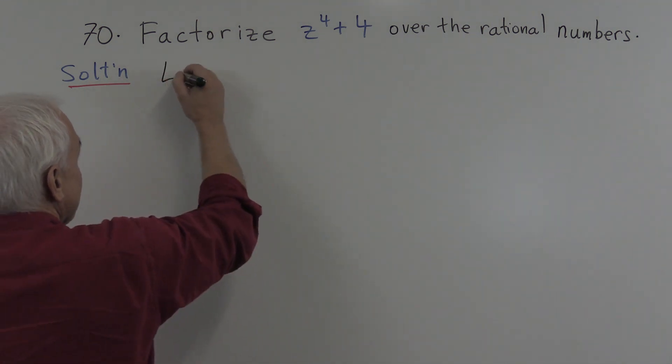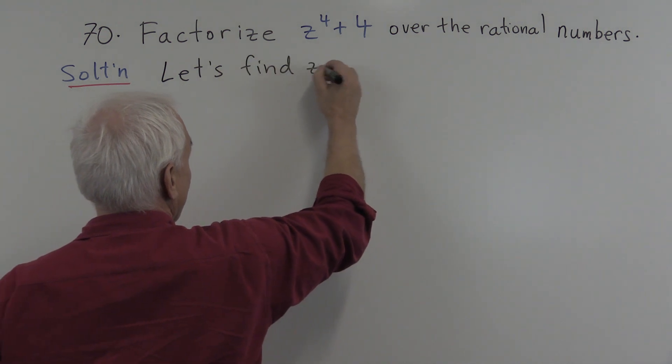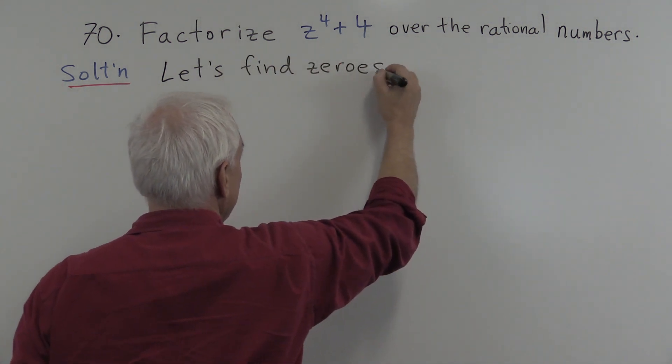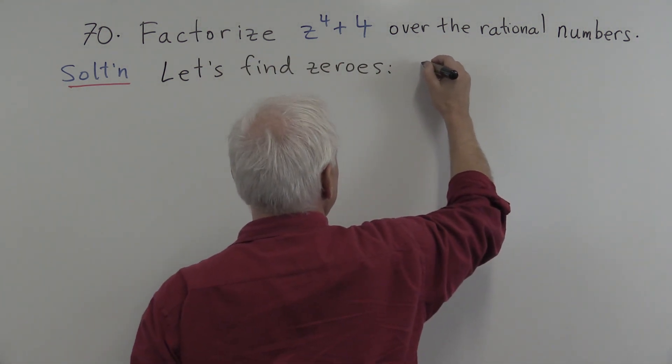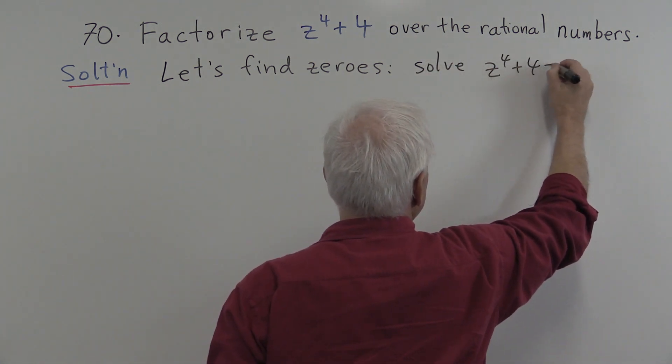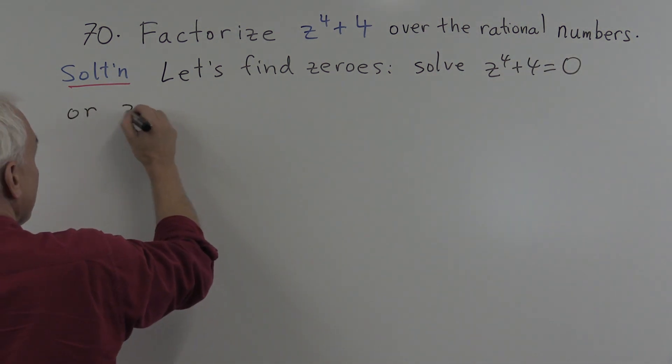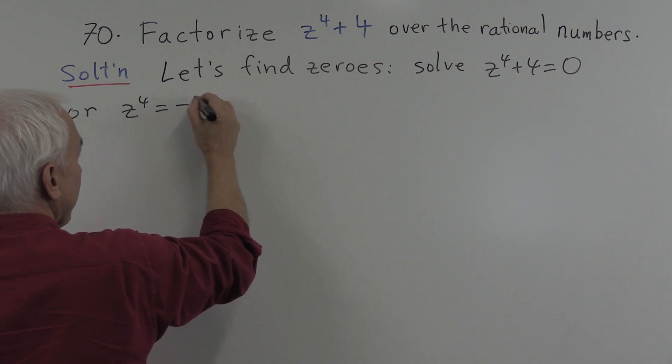All right, so let's find zeros. In other words we try to solve z to the fourth plus 4 equals zero, or z to the fourth equals minus 4.